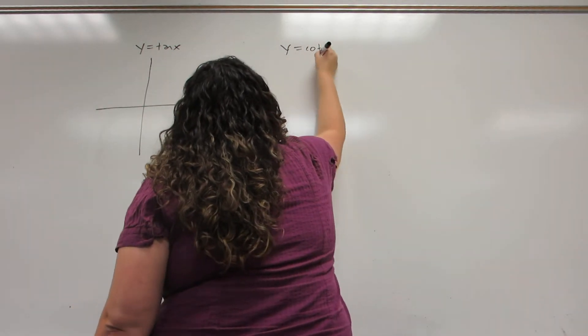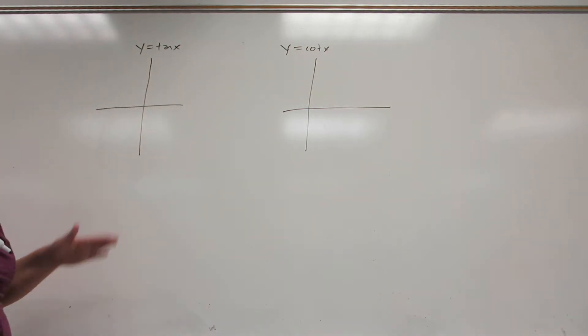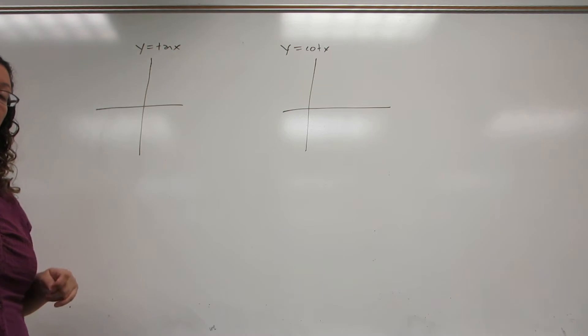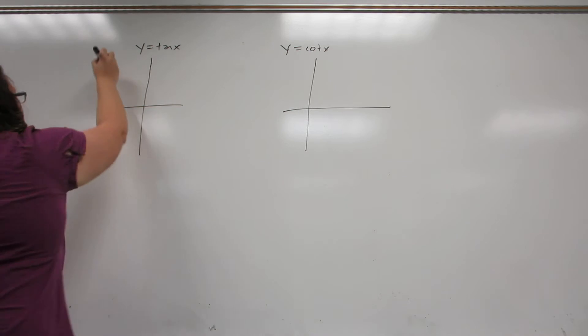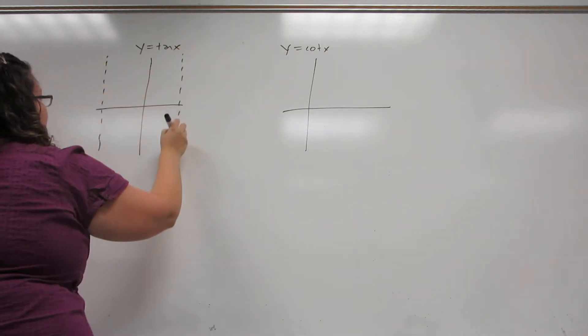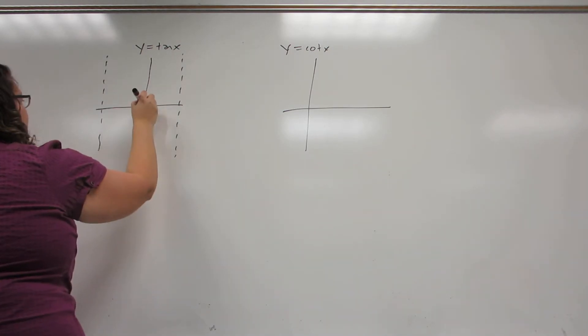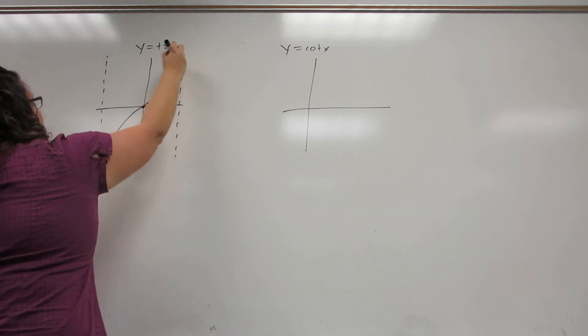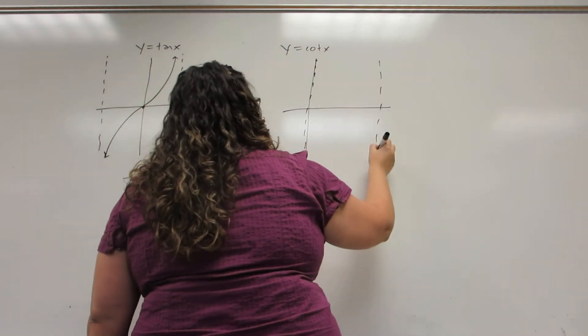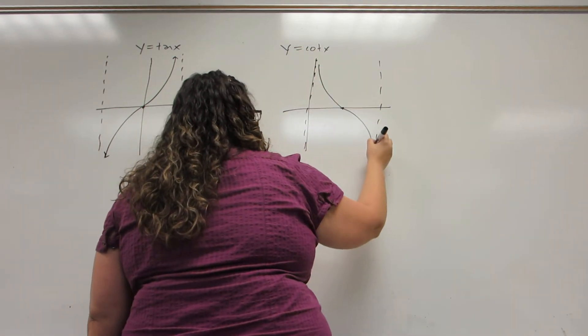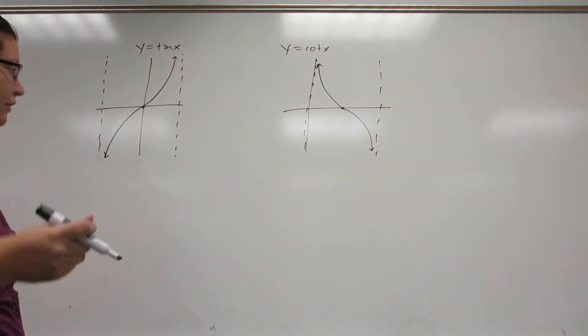So tangent is the only one of the six trigonometric functions that doesn't start at zero. In fact, instead of being its first key point, zero is its middle key point. Both of them have asymptotes, just like secant and cosecant had. And they look very similar. Only tangent moves up and cotangent moves down. Now, a couple things about these.